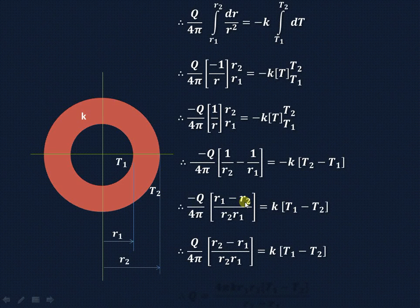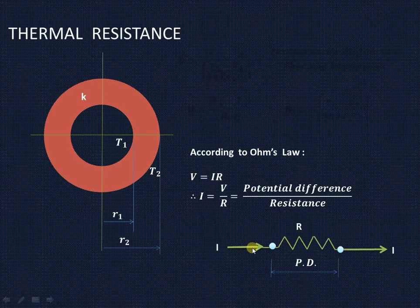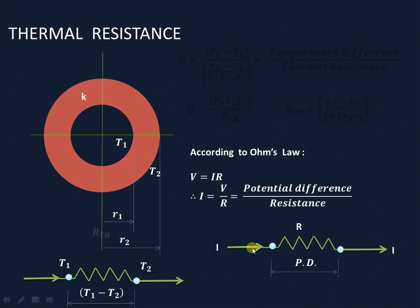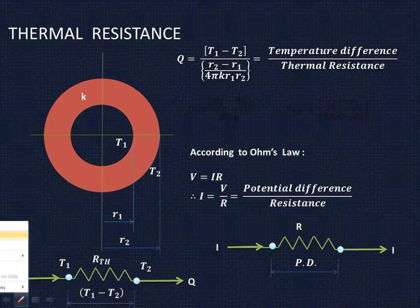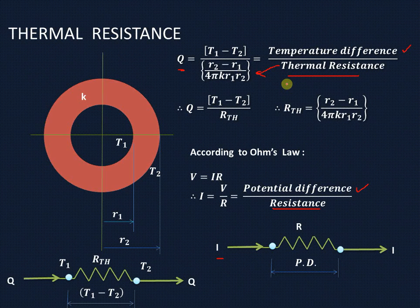Taking the negative sign inside, instead of R1 minus R2 it becomes R2 minus R1. Transferring all terms, 4πR1R2K multiplies the numerator divided by (R2 minus R1). So the heat transfer flow rate for the hollow sphere equals 4πK·R1·R2·(T1 minus T2) divided by (R2 minus R1). Using the electrical analogy — current flow analogous to heat flow, potential difference analogous to temperature difference, electrical resistance analogous to thermal resistance — the thermal resistance R_th for the hollow sphere is (R2 minus R1) divided by 4πK·R1·R2.